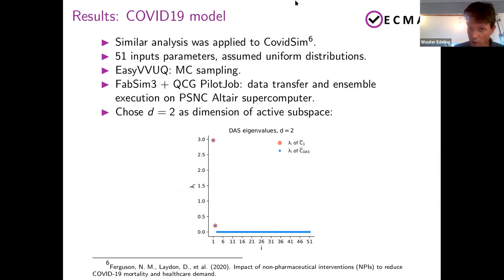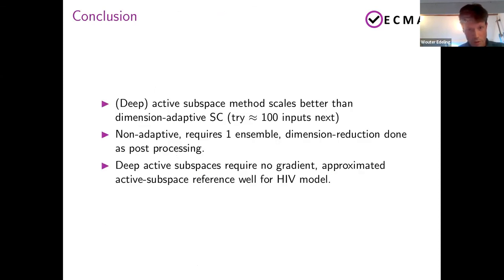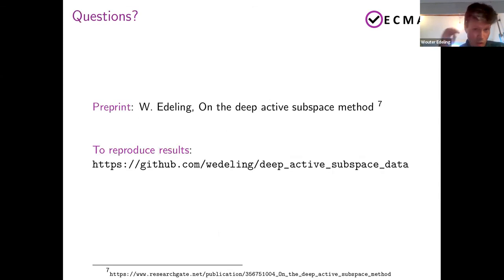And you can do the same with COVID-SIM. So that was the HIV model. This time we applied it to COVID-SIM with 51 inputs. Again, same procedure, standard Monte Carlo sampling. Submitted the jobs to the Eagle supercomputer. And look for the decay in eigenvalues. And this time I had to choose two. So there's roughly a two dimensional active subspace. And I can again compare the response surface in this two dimensional space. So this is my two dimensional surrogate. That's the actual data, the 51 dimensional data plotted on this two dimensional space. And you can see it matches up pretty well, despite having some noise in the data here. And with that, I'll just leave the conclusions up. And this is now preprint, so it's on review. And if you want to reproduce the results, all the code and all the data is available here. So thank you.